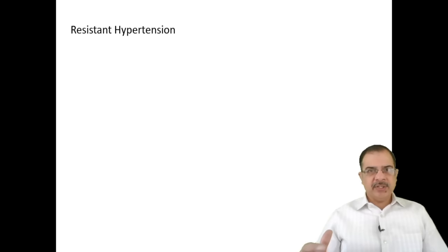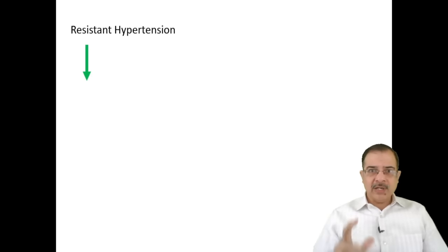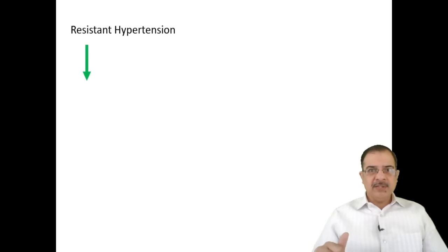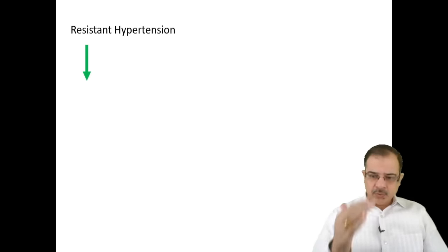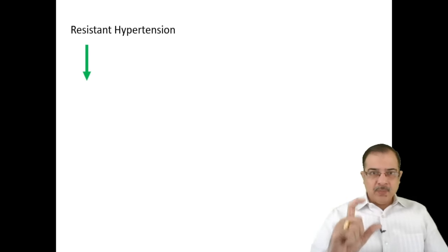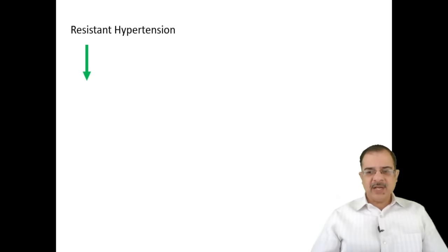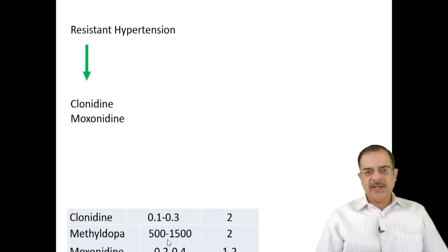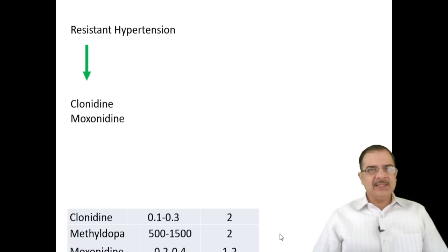In resistant hypertension, after spironolactone has been added and BP is still high, first rule out non-compliance — the patient may be consuming hidden salt in the form of pickles, papad, or similar food items. Take a dietary history, motivate the patient for lifestyle modifications, and advise consistent medication timing each day. Additional agents for resistant hypertension include centrally acting drugs: clonidine 0.1 to 0.3 mg, two to three times daily; or moxonidine 0.2 to 0.4 mg, once or twice daily.